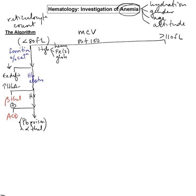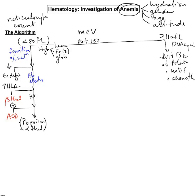Over in the macrocytics, these are all due to abnormalities of DNA synthesis. Our two most obvious causes are vitamin B12 and folate deficiency. Other causes of abnormal DNA synthesis include the preleukemias — our myelodysplastic syndromes. And of course many chemotherapy drugs are targeted against DNA synthesis, so patients taking methotrexate for rheumatoid arthritis will all have high MCVs as well.